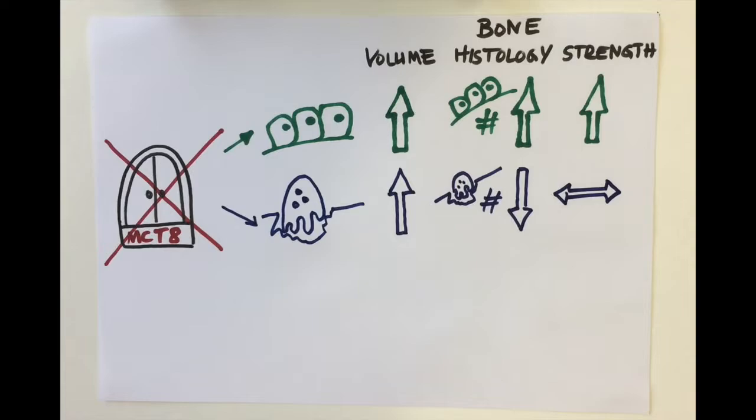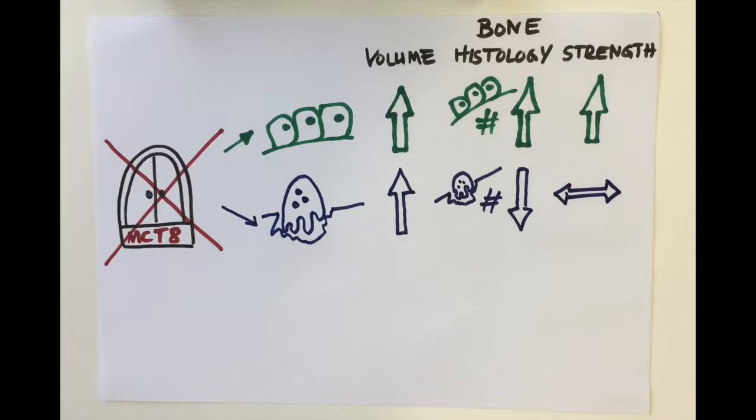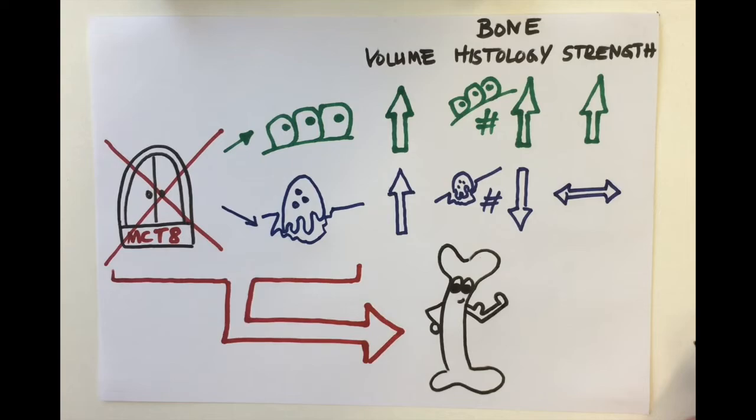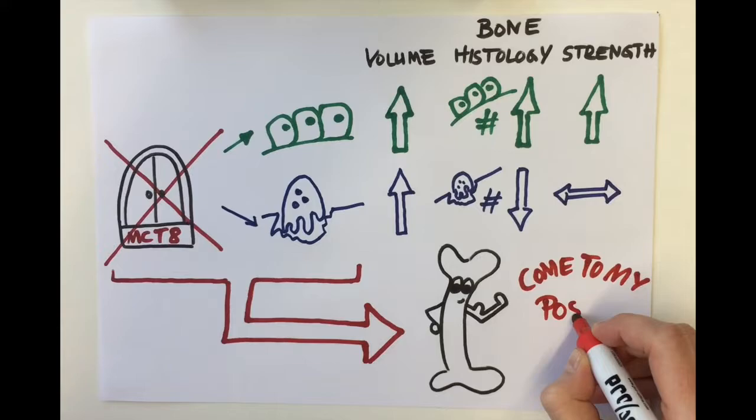In conclusion, we demonstrated that osteoblast as well as osteoclast specific MCT8 deletion results in improved bone volume and quality due to distinct underlying mechanisms. If you are now curious to find out more about the role of MCT8 in bone, come to my poster.